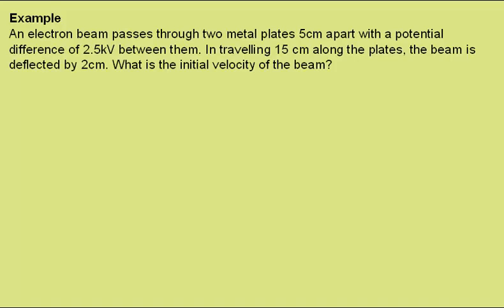Let's look at an example of dealing with the charged particle motion in an electric field, in the same way that we deal with projectile motion in a gravitational field. An electron beam passes through two metal plates 5 cm apart, with a potential difference of 2.5 kV between them. In travelling 15 cm along the plates, the beam is deflected by 2 cm. What is the initial velocity of the beam?